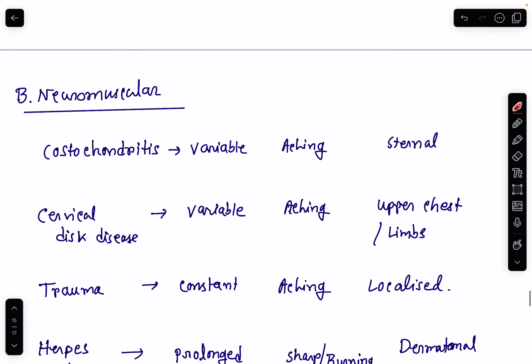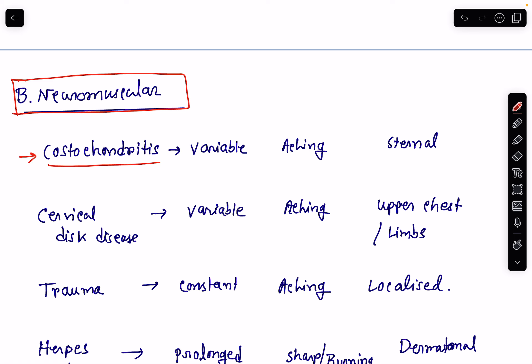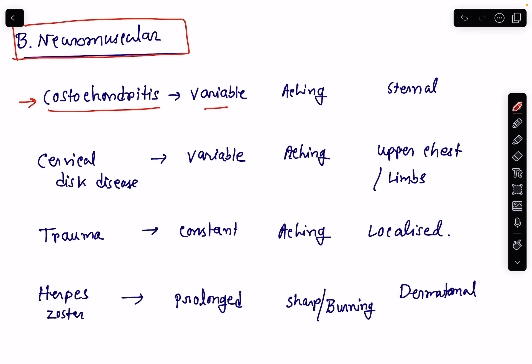Next are neuromuscular conditions which may lead to chest pain. First is costochondritis — the inflammation of the costochondral junction. The duration is variable, the nature is aching type, and the location is sternal. The associated feature is that on examination the pain is reproducible, and there will be tenderness and sometimes swelling and redness over the costochondral junctions.